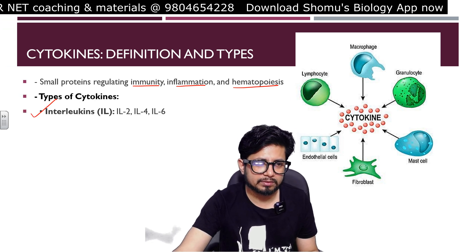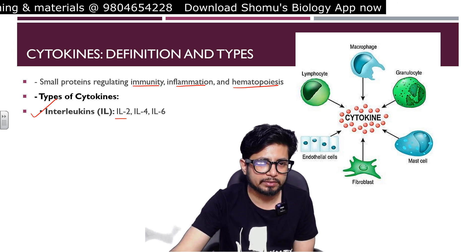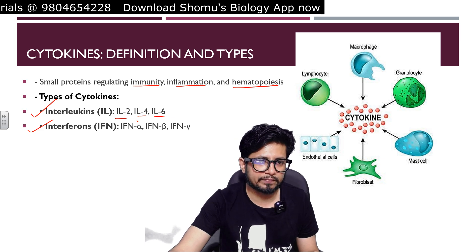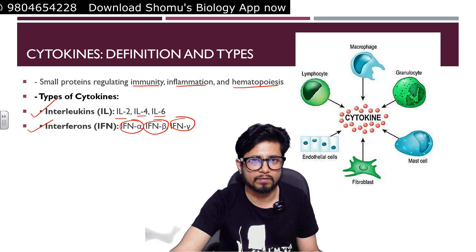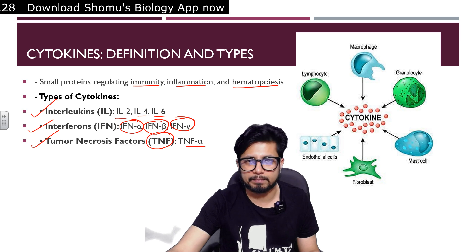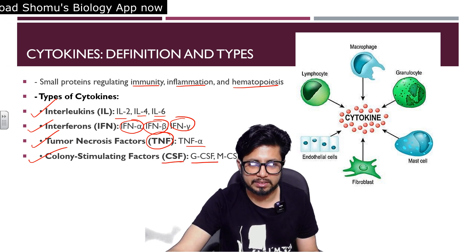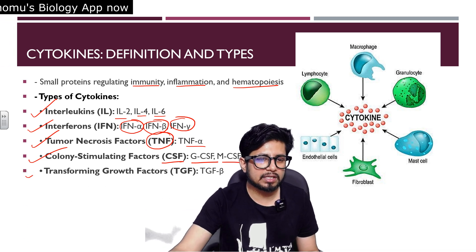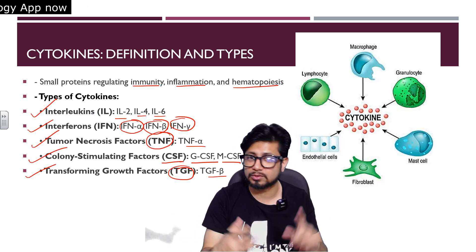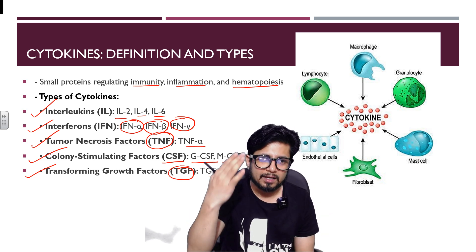The types of cytokines: the name that always comes to mind is interleukins, or ILs — interleukin-2, interleukin-4, interleukin-5, interleukin-6, interleukin-10, interleukin-13, and many more. Interferons are also a type of cytokine: interferon alpha, interferon beta, and interferon gamma (IFN). Then there is tumor necrosis factor, or TNF — TNF-alpha for example. Colony stimulating factors (CSF) include granulocyte colony stimulating factor (G-CSF) and monocyte colony stimulating factor (M-CSF). Transforming growth factor TGF-beta also comes under cytokines. All these small proteins fall under the umbrella of cytokines.